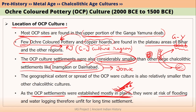If any settlements are established in plains, there is a risk of flooding. Because in India we have a monsoon type of climate, and during monsoon we receive heavy rains. Because of these heavy rains, there is a risk of flooding as well as water logging in the river plains.